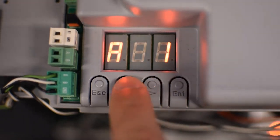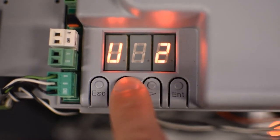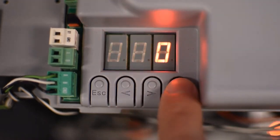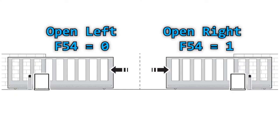Then we need to select the opening direction in F54. By default, it's set to open to the left, but in my case the gate opens to the right, so I'll select one.